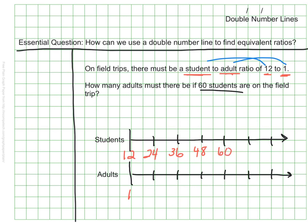I could continue on, but I remember that in my initial question, I was trying to figure out how many adults there would be if there are 60 students. So here I am at the number that I'm searching for, my 60.